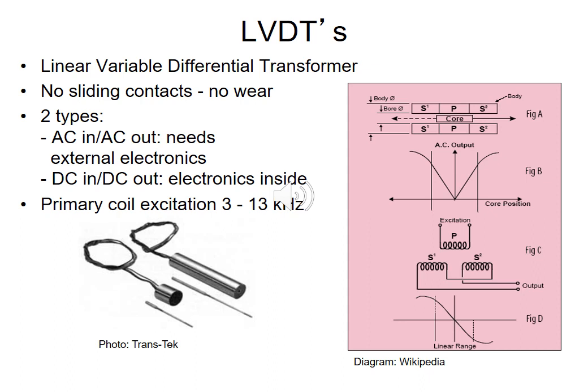We have a rod which moves in a cylinder essentially, and the movement of the rod results in a change in the voltage output that we get from the LVDT. Within a certain range, as you can see by the lines either side of the proportional region in Figure B and indeed in Figure D, depending on the nature of the excitation, we get a relatively proportional output of voltage with respect to changes in displacement.